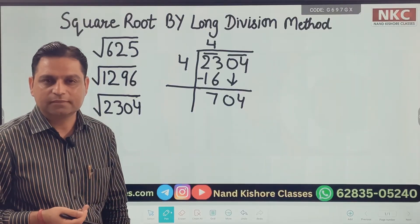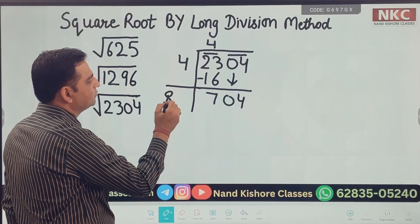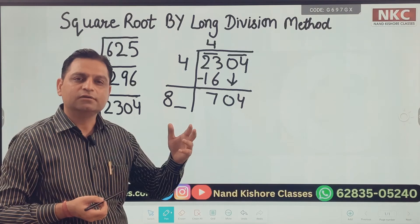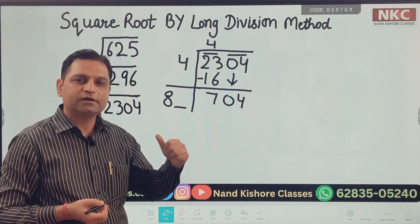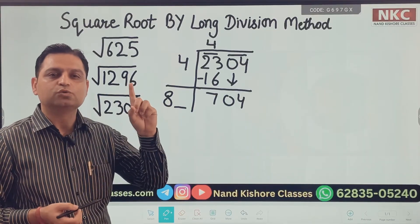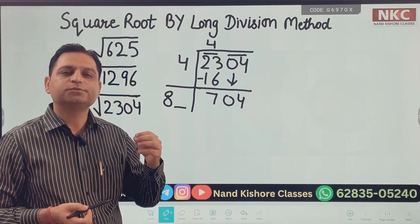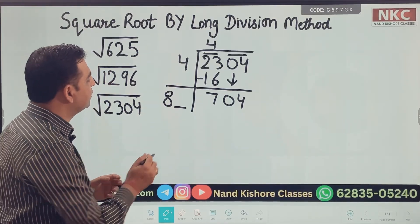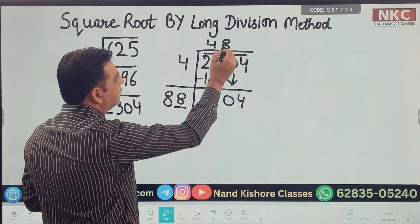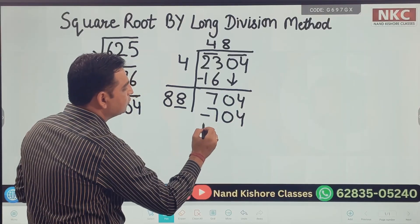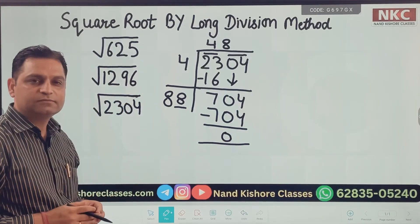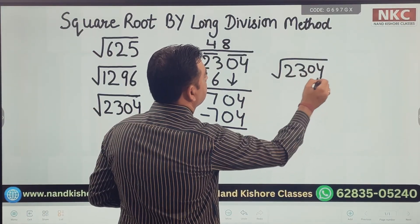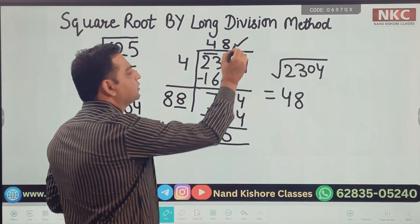It is a routine step. Now 4 plus 4 is 8. Make a space here — something to be written. Is there any number where the square ends with 4? There are 2 options: 2, because 2 squared is 4; and 8, because 8 squared is 64, which ends with 4. What I am trying here: I should write 8, because 88 multiplied by 8 gives 704 and the remainder is 0. So the square root of 2304 is 48.